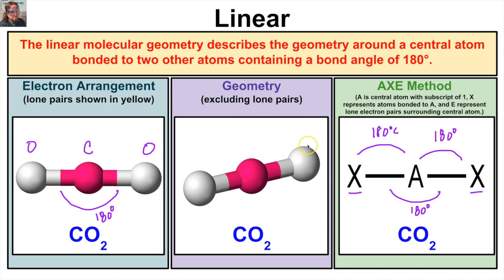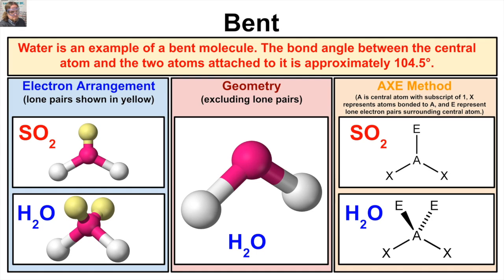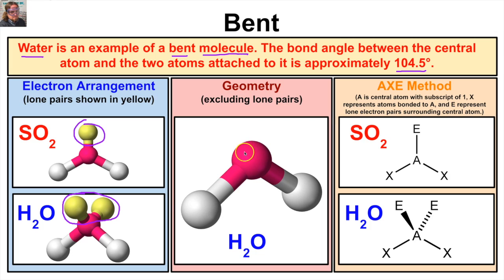That is our first molecular geometry — linear. Now let's look at the second molecular geometry shape called bent. Water is an example of a bent molecule. The bond angle between the central atom and the two atoms attached to it is approximately 104.5 degrees. Looking at the electron arrangement of bent molecules, we can see two different scenarios: one lone electron pair, or as in the case of water, two lone electron pairs surrounding the central atom. Both SO₂ and H₂O are considered bent.